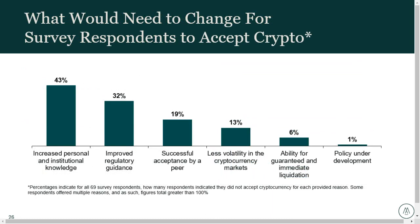We also asked what would need to change for institutions to consider and adopt crypto in some form. What we saw was that increased knowledge of crypto was the front runner, followed by things that speak to risk mitigation: improved regulatory guidance and peers successfully accepting crypto. Essentially, comfort with crypto via knowledge, risk mitigation, and peer adoption were the key drivers. These results dovetail nicely with the poll — increased knowledge and improved regulatory guidance are helpful for accepting and considering crypto for an organization.